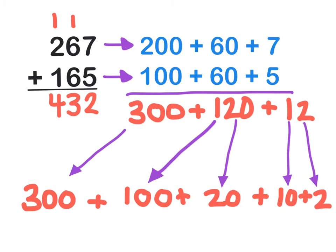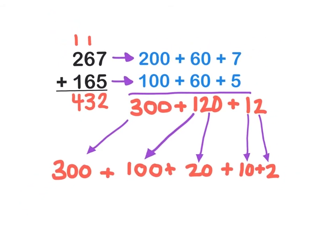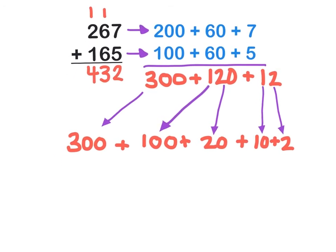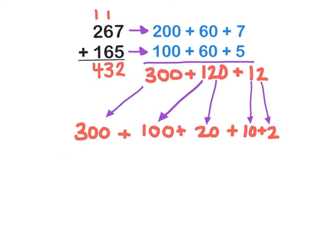Okay, so now we have everything spelled out for us by place value. I'm going to use that place value to combine similar numbers again. So, we're going to start with 300 and 100, which are both hundreds. Together, that makes 400.